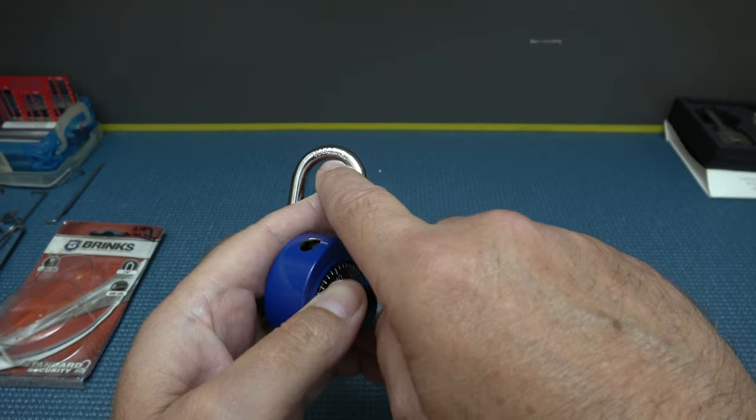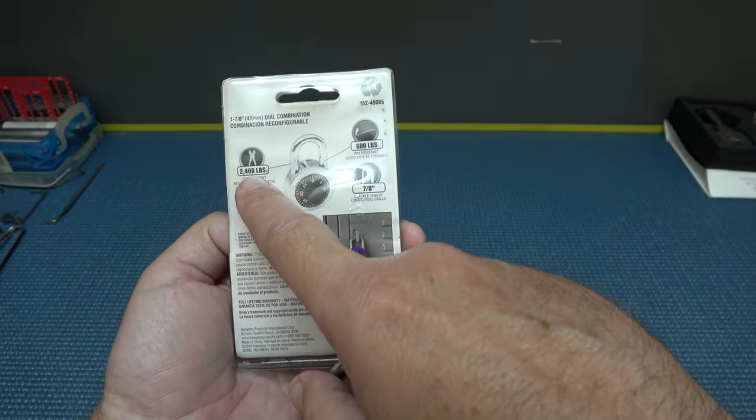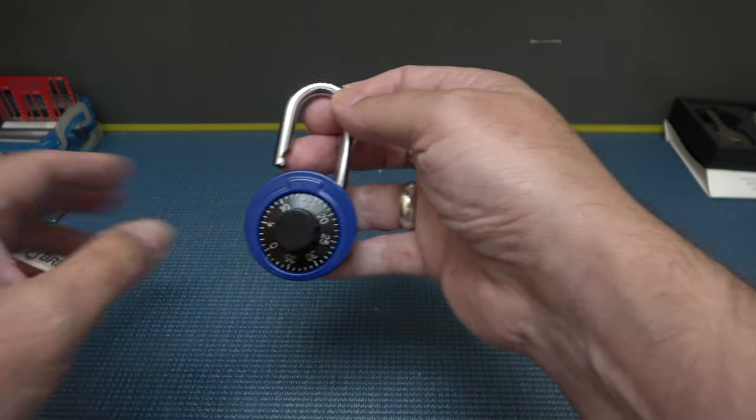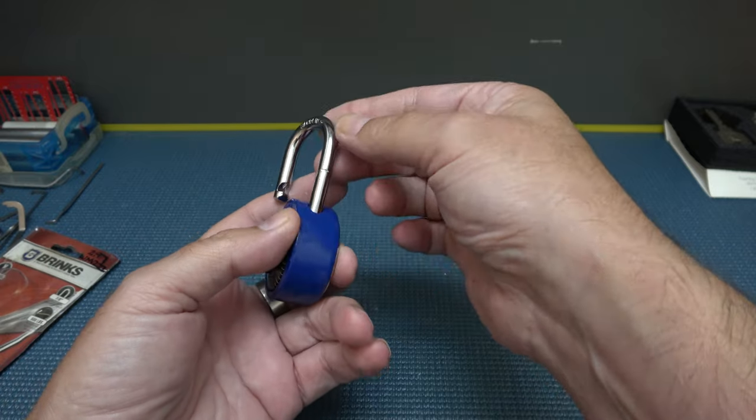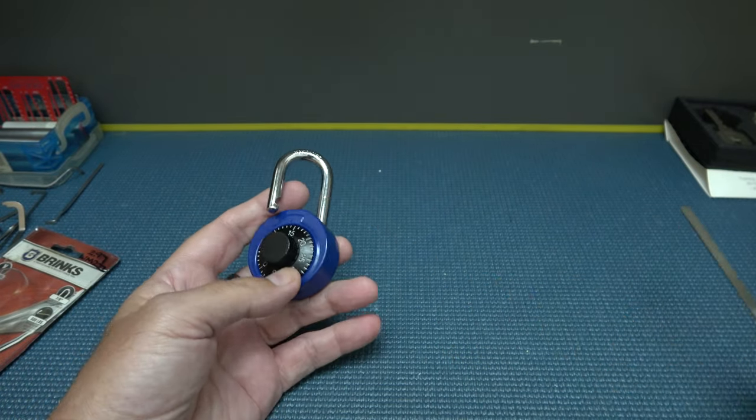I mean, they can put hardened on there because it's slightly hardened, I guess. But I don't know about that 2,400 pounds of bolt cutter force. Yeah, I don't know about that. You can see how easy that little file is just cutting right into that.